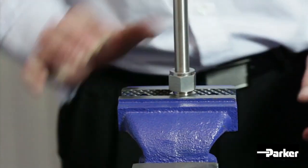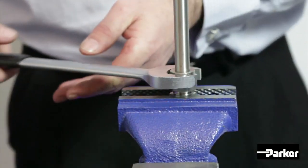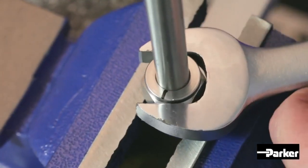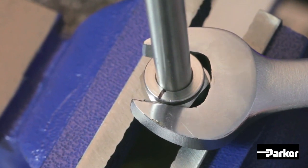Holding the body securely, tighten the nut to finger tight and using your wrench, tighten the nut to take the ferrules to their original pre-set position. An increase in torque will be felt as you are resetting the ferrules.